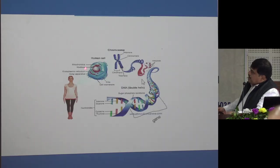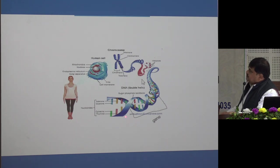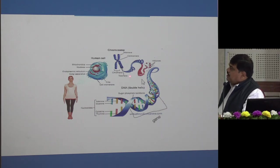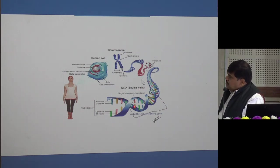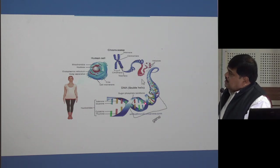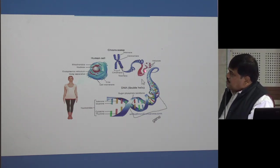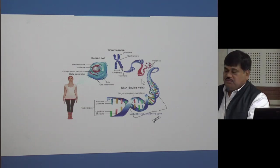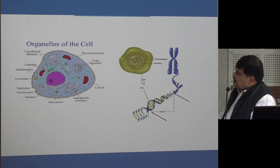Human beings have cells; inside the cell there is a chromosome. If you uncoil the chromosome, there are a lot of genes inside our body. Each small piece is a gene, and there are several genes. There are around 28 to 30 thousand genes in the human body.